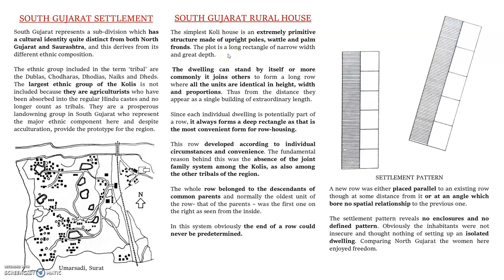These vertical poles are covered by wattle and daub, which is the predominant material used in their dwelling units. With these elements they produced some partitions, which served both for privacy and for enclosure. Initially the dwelling units used this particular material, and even the roof was a slope roof made of bamboo or available wood.